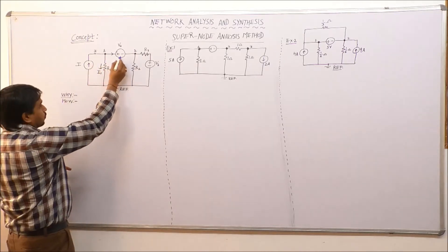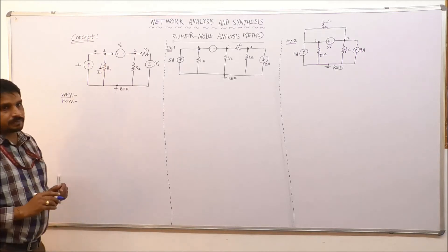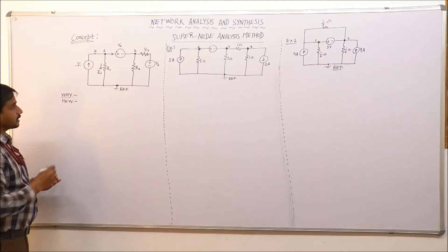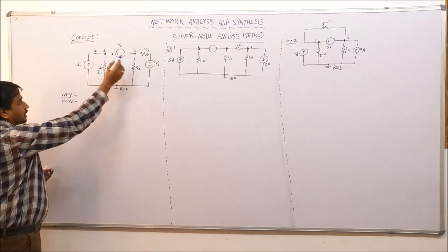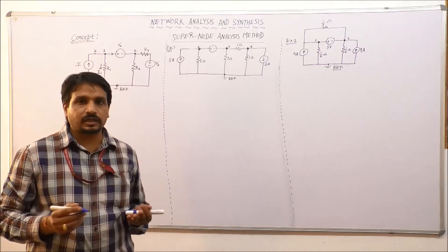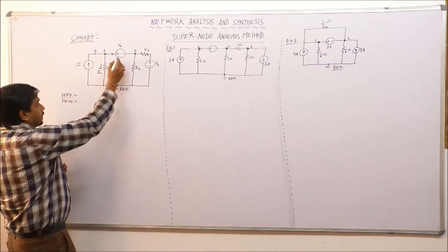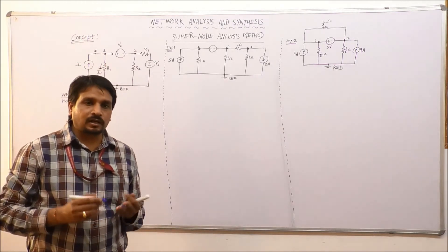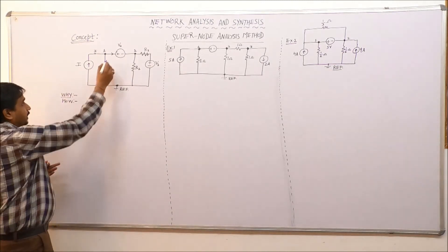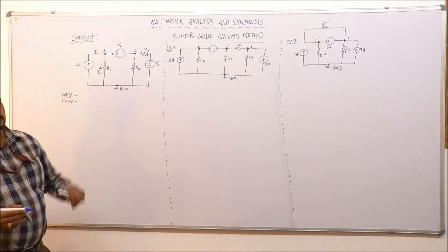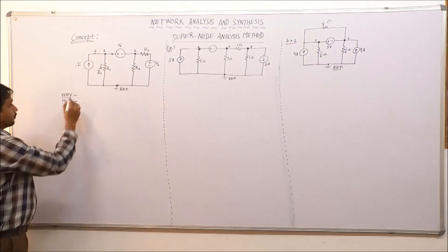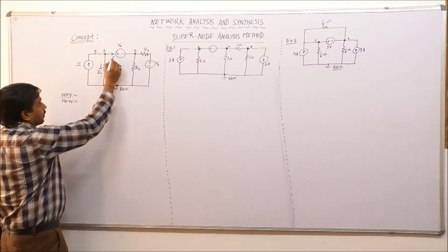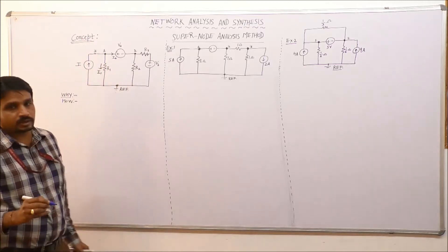In place of this voltage source, if we assumed some resistance, then I could easily determine the current using Ohm's law: I equals V1 minus V2 divided by the resistance connected between node 1 and 2. But that is not the case here — we have a voltage source, not a resistance. We do not know its internal resistance, nor is the current through it given. So one way to solve this is to assume some unknown current Ia flowing through the voltage source Va.